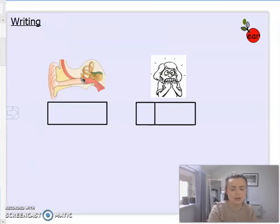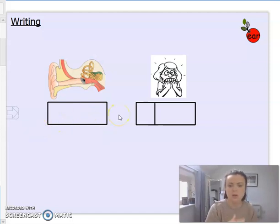So now we'll have a go at some writing. So I've got some pictures here. Notice here that I've only got one box in my phoneme frame. Here I have got two boxes. I'm not going to help you for this one. I want to see if you can do it independently. So I would like you to pause me and I'd like you to have a go.